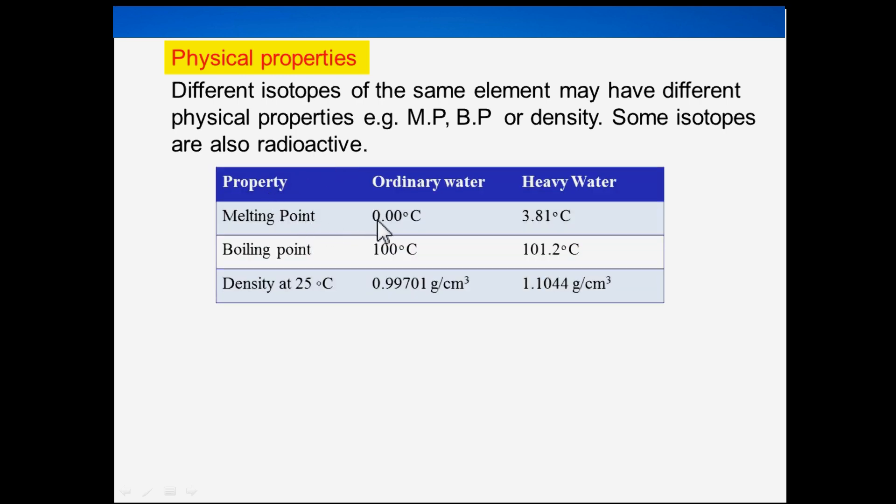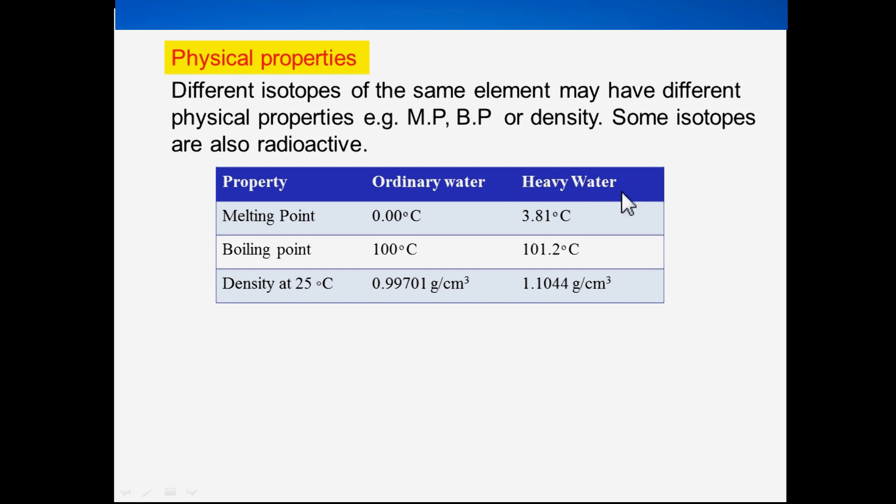In this table, you can see ordinary water, which is made up of protium isotopes of hydrogen, and heavy water, which is made up of deuterium isotopes. The melting point of ordinary water is 0 degrees Celsius, while heavy water is 3.81 degrees Celsius.